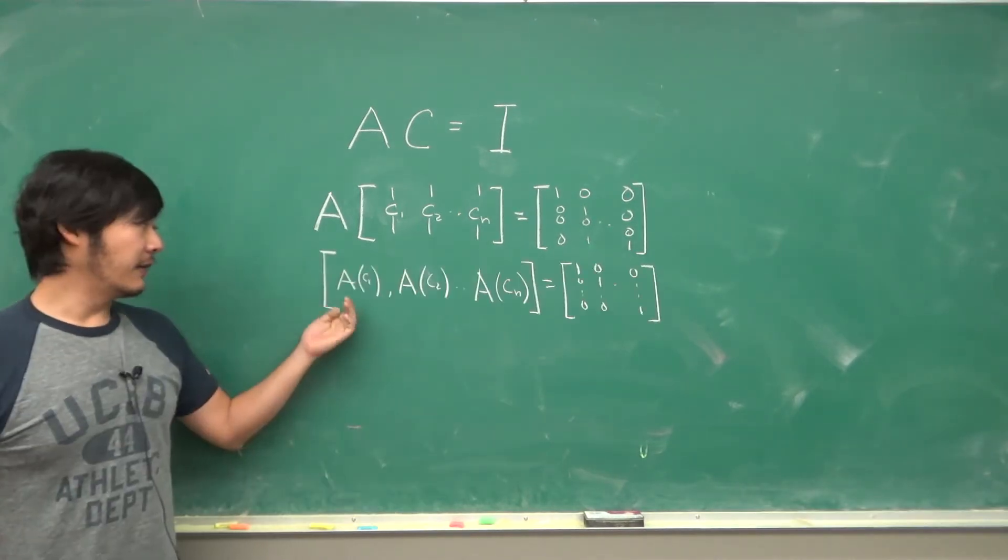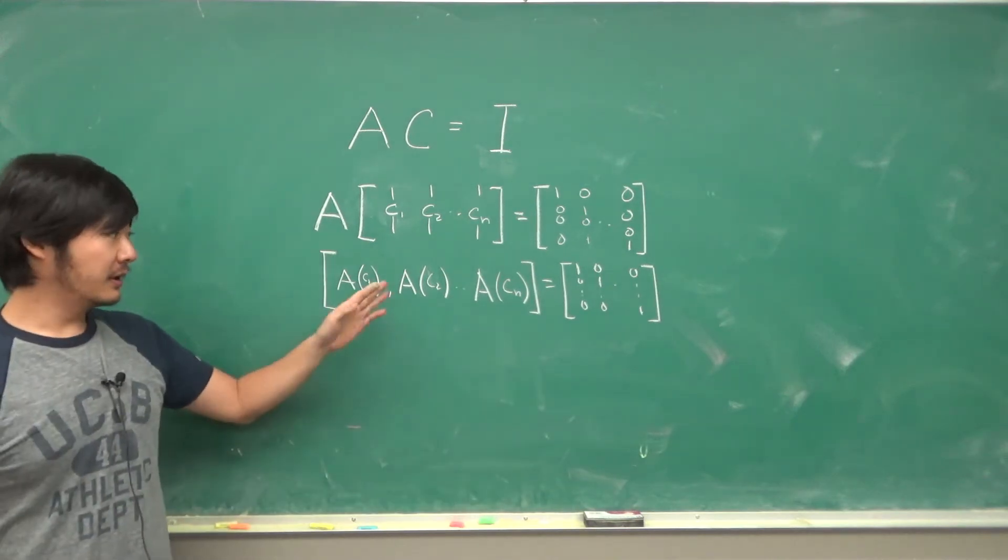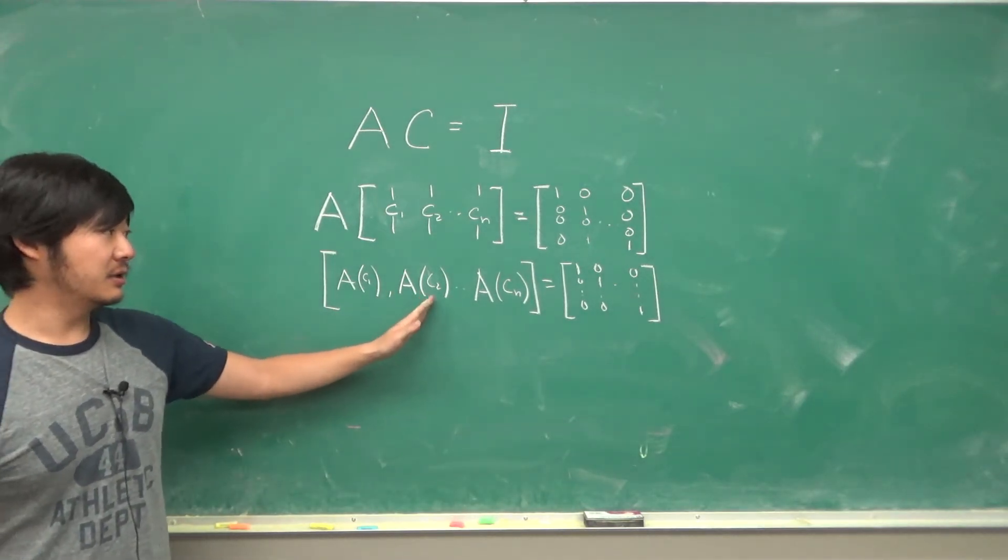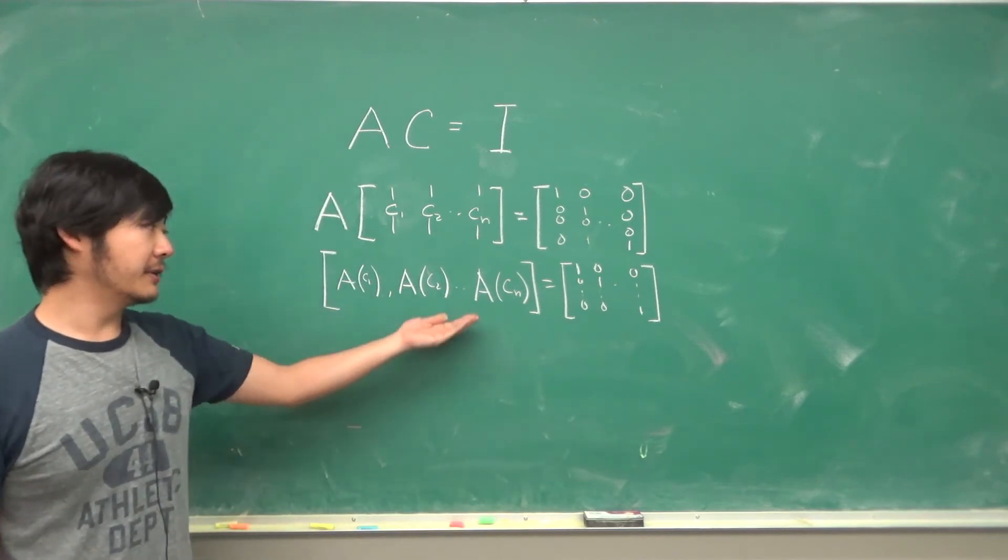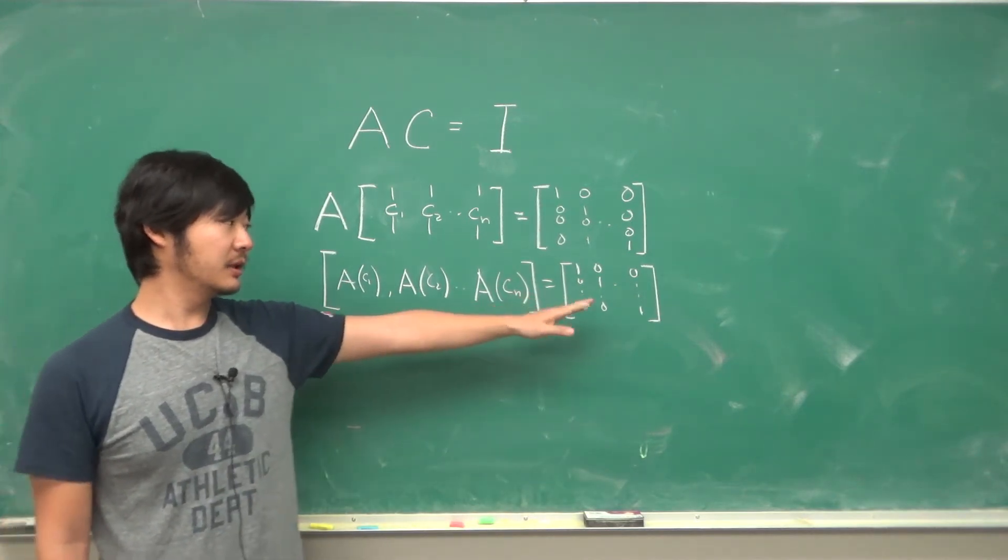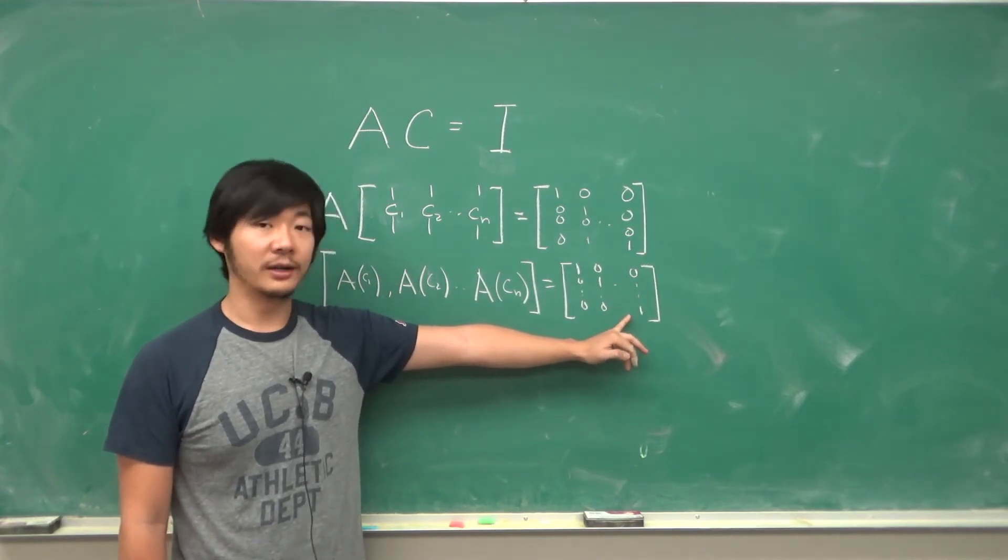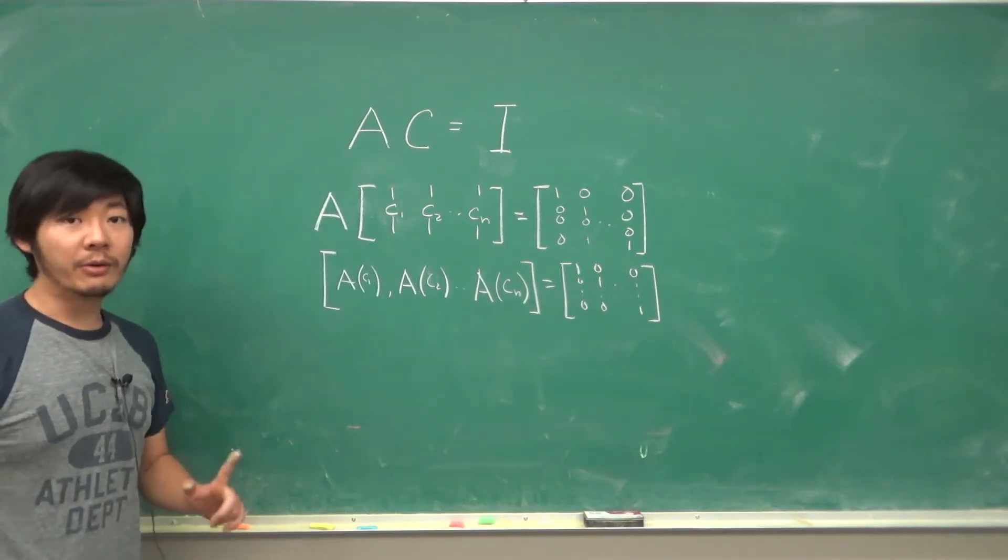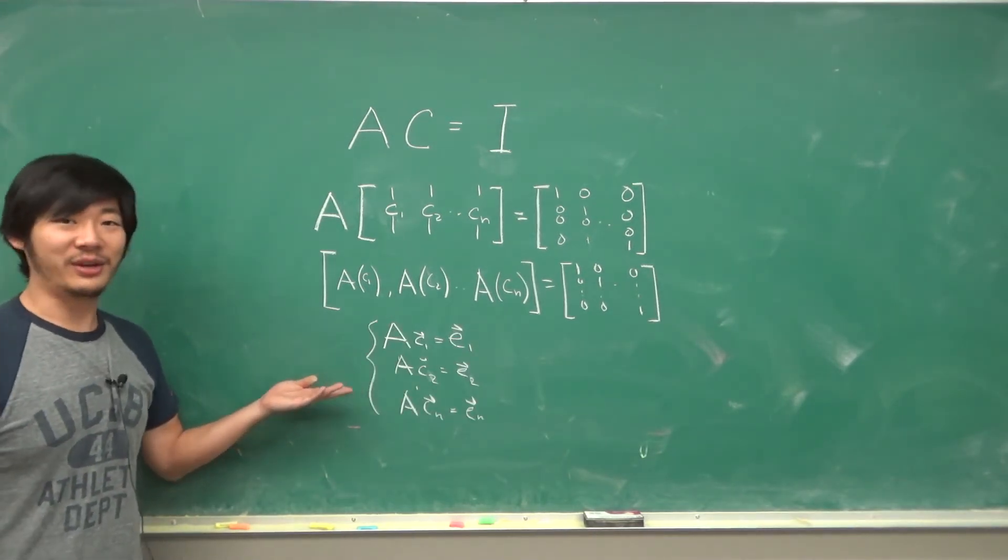So A times the column C1 needs to equal 1 0 0 etc. A times the column C2 needs to equal 0 1 and then 0s all the way down to A times the C nth column is equal to 0 0 all the way down to 1 at the last entry. So what we want to do is simultaneously solve a system of systems of linear equations.